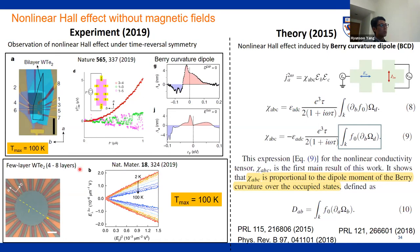This theory was confirmed in 2019 by two different groups, both using tungsten ditelluride, showing quadratic behavior of voltage as a function of current — expected in the nonlinear Hall effect — and attributed to the Berry curvature dipole. Unfortunately, the observation was made only up to 100 Kelvin; for real applications we need room temperature detection.